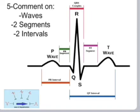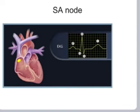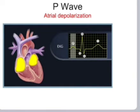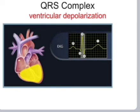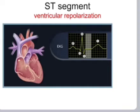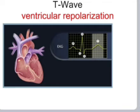Waves, segments, and intervals: PR interval is from the start of P to the start of QRS. PR segment is from the end of P to the start of QRS. QRS complex spans from the start of Q to the end of S. ST segment is from the end of S wave to the start of T wave. QT interval is from the start of Q to the end of T wave. The SA node generates the P wave (atrial depolarization). The AV node, His-Purkinje system generates the PR segment. QRS duration indicates ventricular depolarization, and the ST segment shows ventricular repolarization.